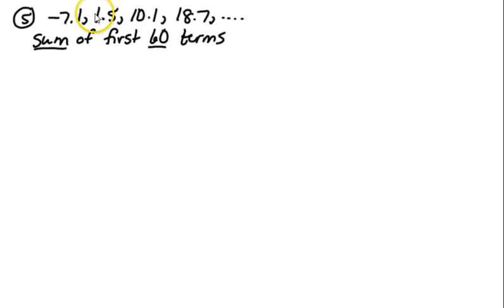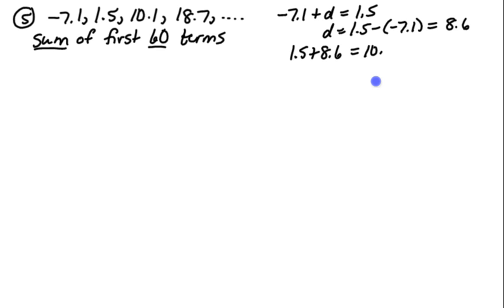If we look at this, no pattern leaps to mind. I did that deliberately so you'd have to look at it. I'm going to try addition first, it looks easier. I know that negative 7.1 plus some number d has to equal 1.5, so d would be 1.5 minus negative 7.1, which turns out to be 8.6. Now if I add 1.5 plus 8.6, do I get 10.1? Yes. And is 10.1 plus 8.6 equal to 18.7? Yes. So I found an arithmetic sequence, and d is equal to 8.6.